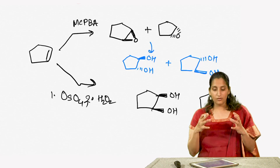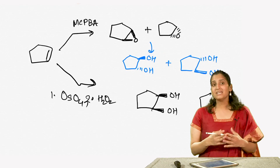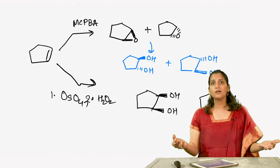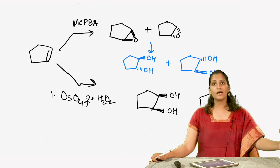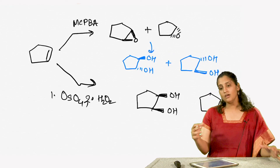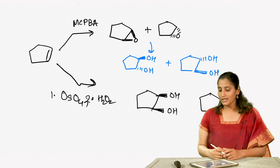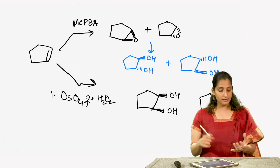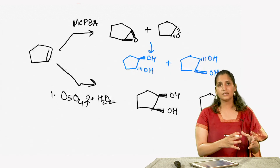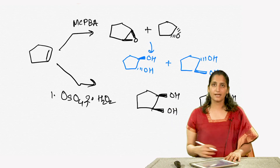Epoxides are very important building blocks in organic synthesis because they are so reactive and can be easily converted to various other functional groups. You just need a good nucleophile to kick open an epoxide, and it opens up to form a new molecule with an alcohol end that can further be converted to various other functional groups. That is why epoxides are one of the main building blocks in synthesizing organic compounds, concluding this chapter on alcohols, ethers, thiols, and epoxides.